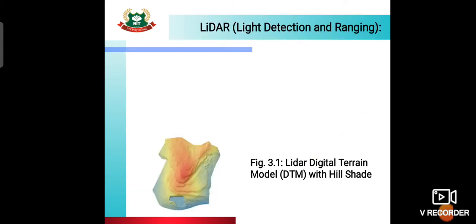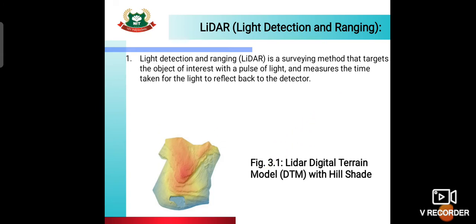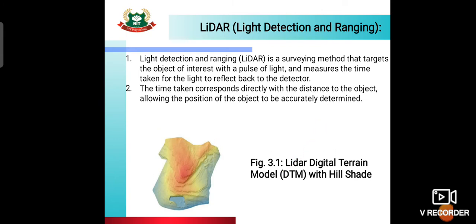Now, Lidar — what is the full form of Lidar? Light Detection and Ranging. Lidar is a surveying method that targets the object of interest with a pulse of light, measures the time taken for the light to reflect back to the detector. The time taken corresponds directly with the distance to the object, allowing the position of the object to be accurately determined.